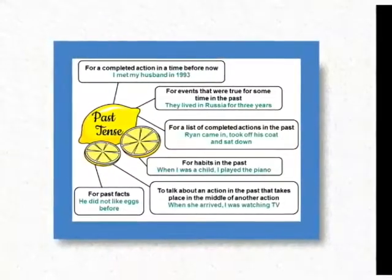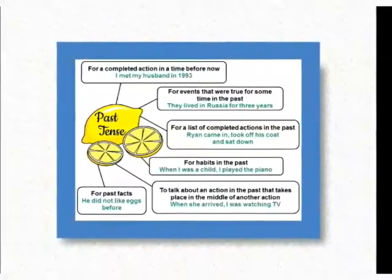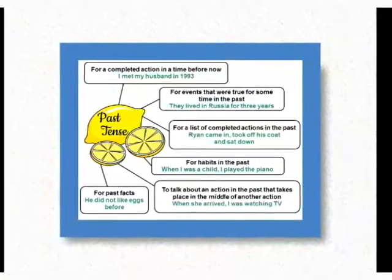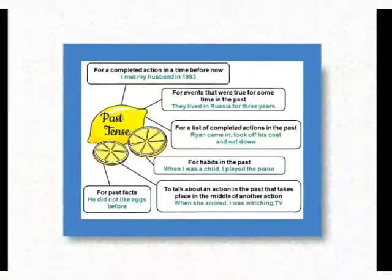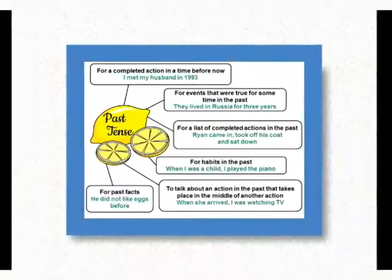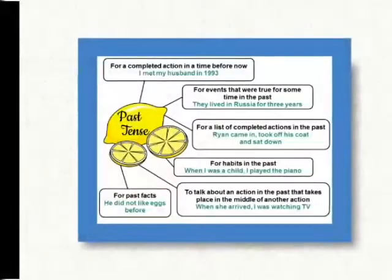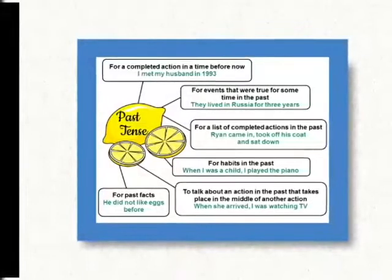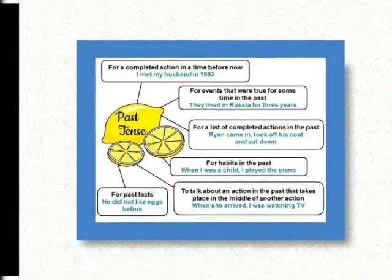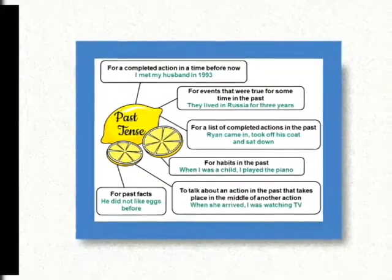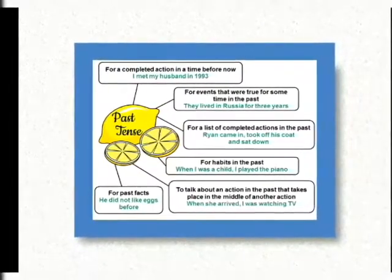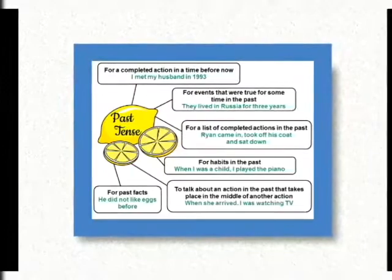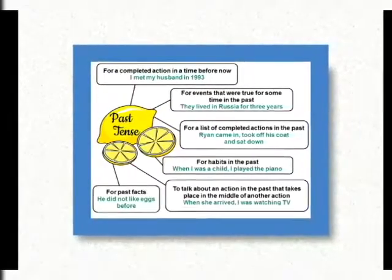Actions which have been started and completed in the past: 'Ryan came in, took off his coat and sat down.' 'Came' is the second form of 'come,' 'took' is the second form of 'take,' and 'sat' is the second form of 'sit.'